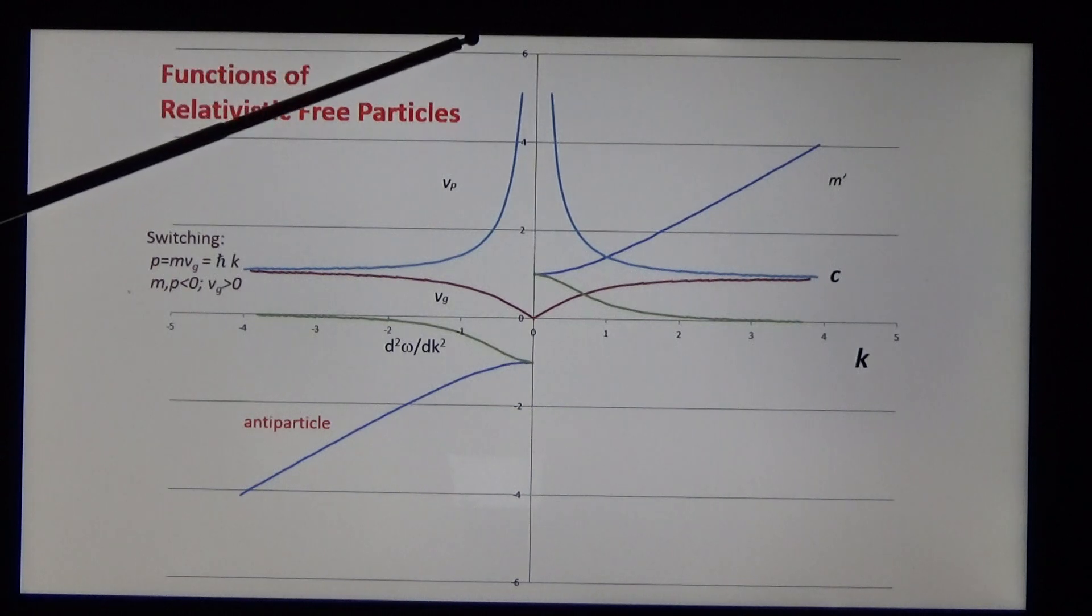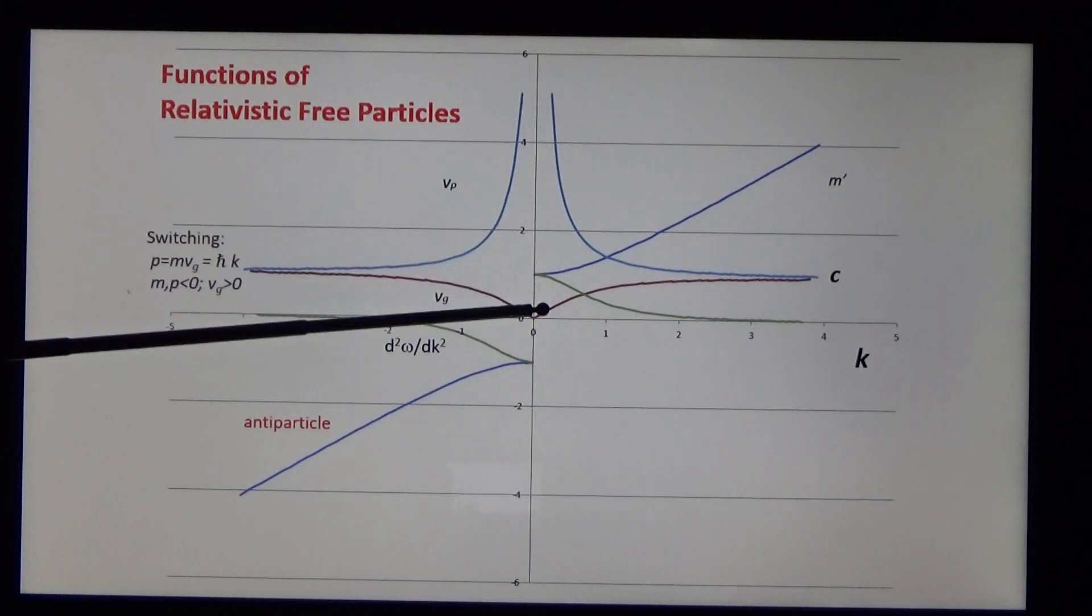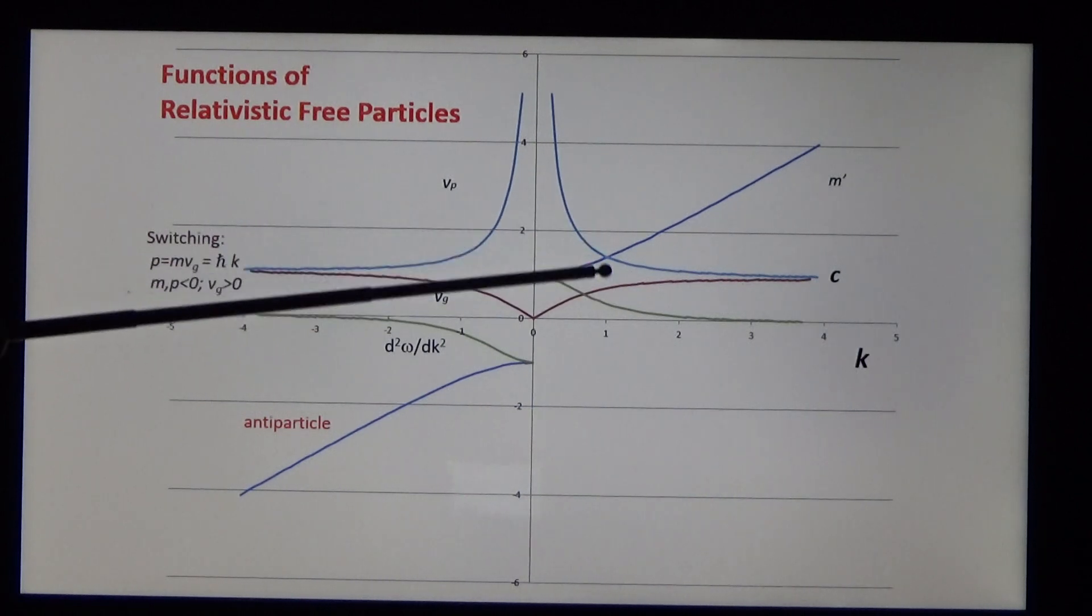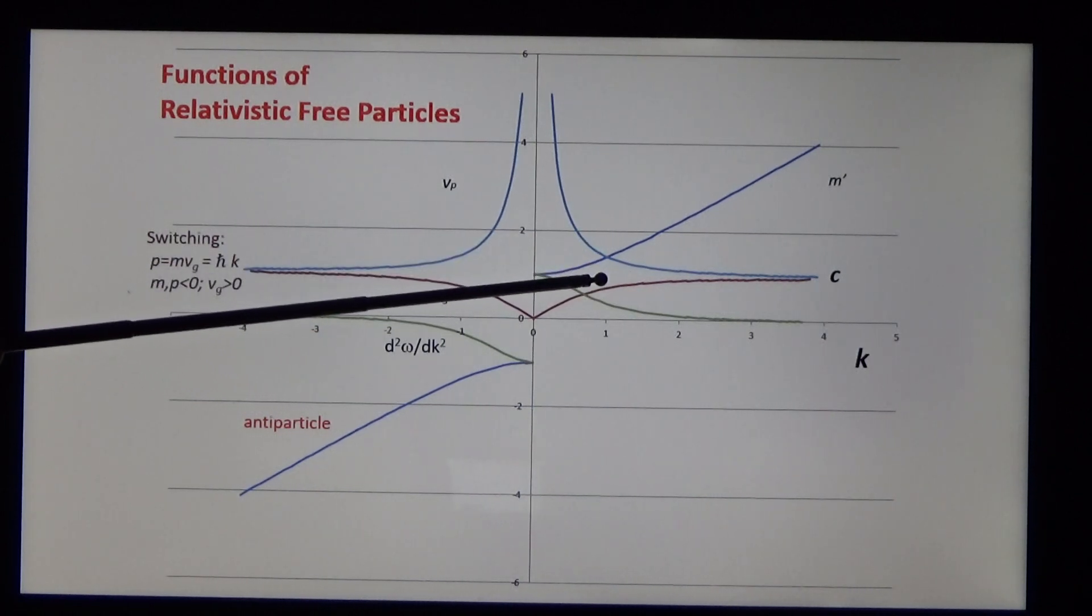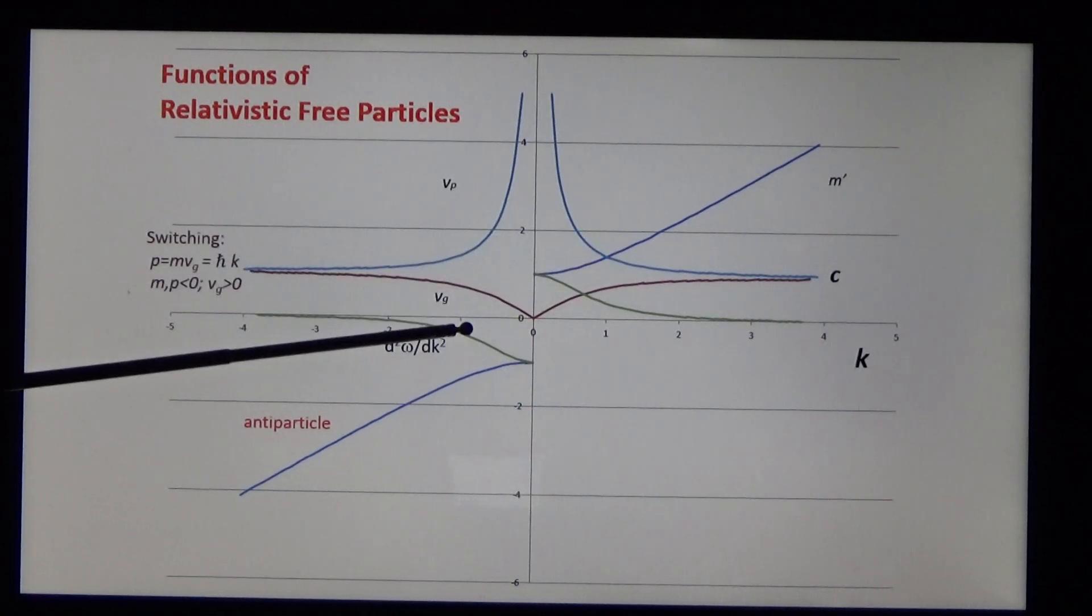Now, in a crystal field, this free particle dispersion is made to fluctuate, forcing the effective mass to be sometimes positive and sometimes negative. Let's have an example.